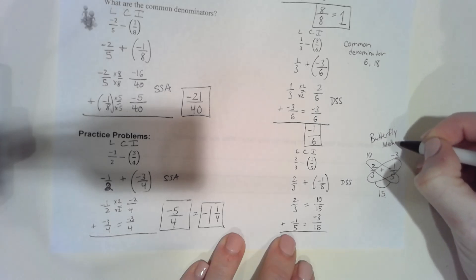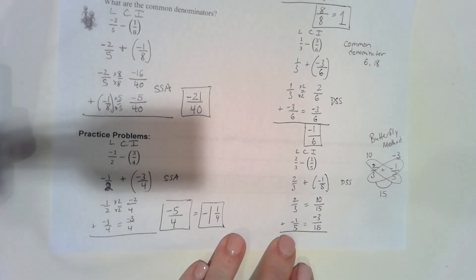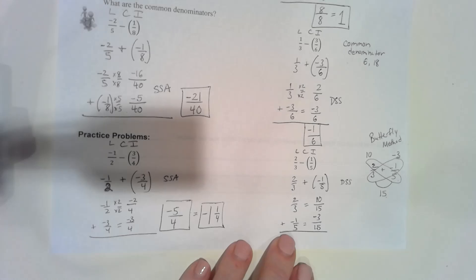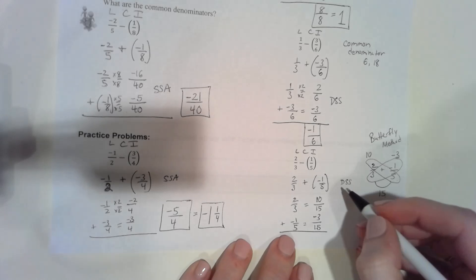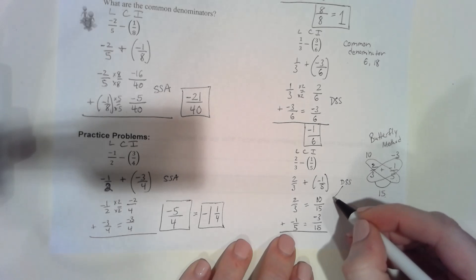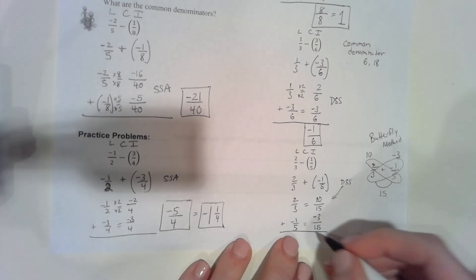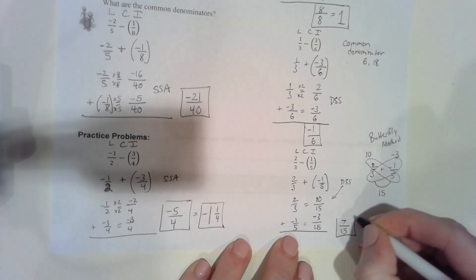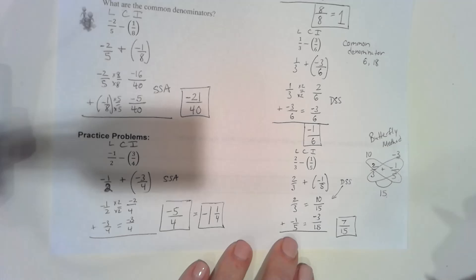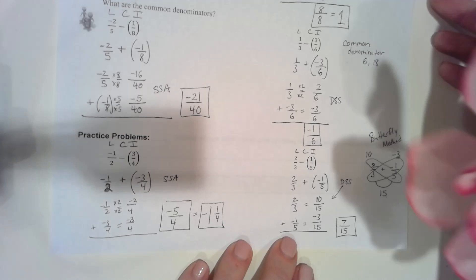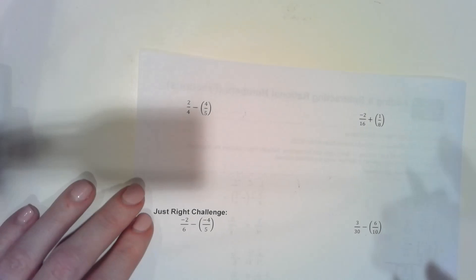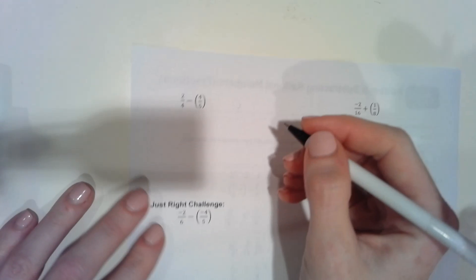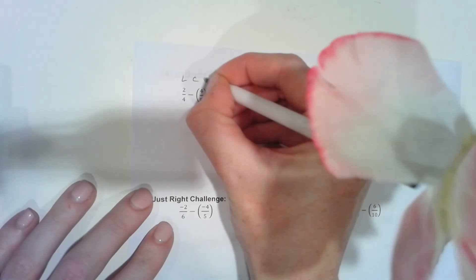It works every time — you might get some large numbers, but it always works. Different signs: subtract. Ten minus three makes seven, denominator stays fifteen. My answer is positive because ten is larger.